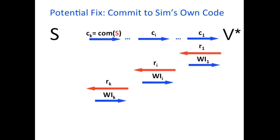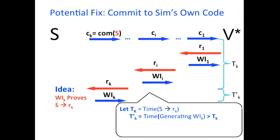A potential fix is: instead of committing to the verifier's code, commit to the simulator's code itself. Since in the simulation everything is generated by the simulator, in the WI we should be able to prove that the simulator on no input at all can produce Rk. Unfortunately, this introduces a new problem: simulation time blows up. The time T'k for generating the WI is bigger than Tk. With further nesting, if a session k+1 encloses session k, Tk+1 is at least twice Tk, and the runtime blows up exponentially.